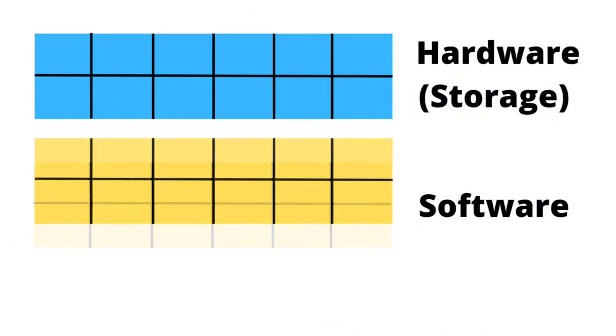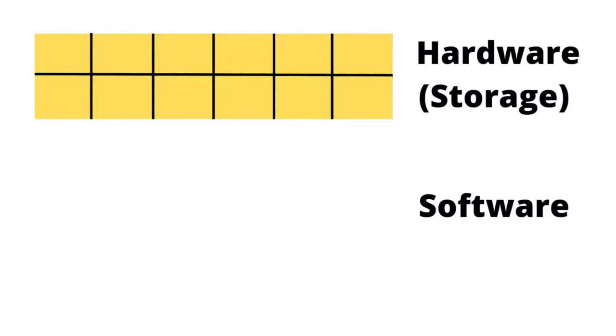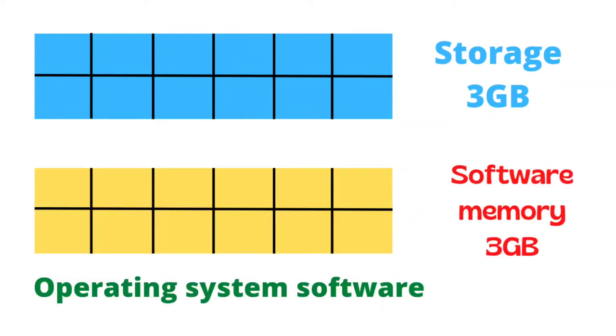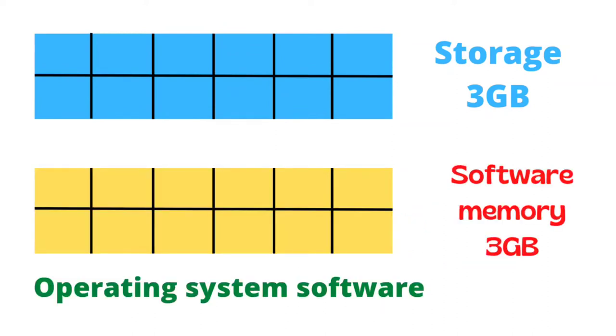That virtual memory, which begins as software, needs hardware to support it. The memory on every smartphone or computer is basically a function of the software, and that software is then mapped onto the hardware. If you've got two gigs of virtual memory, it's going to be addressed to two gigs of RAM. Every time you boot up your phone, the OS checks how much memory is there, creates that amount of virtual memory, and maps it onto the RAM.